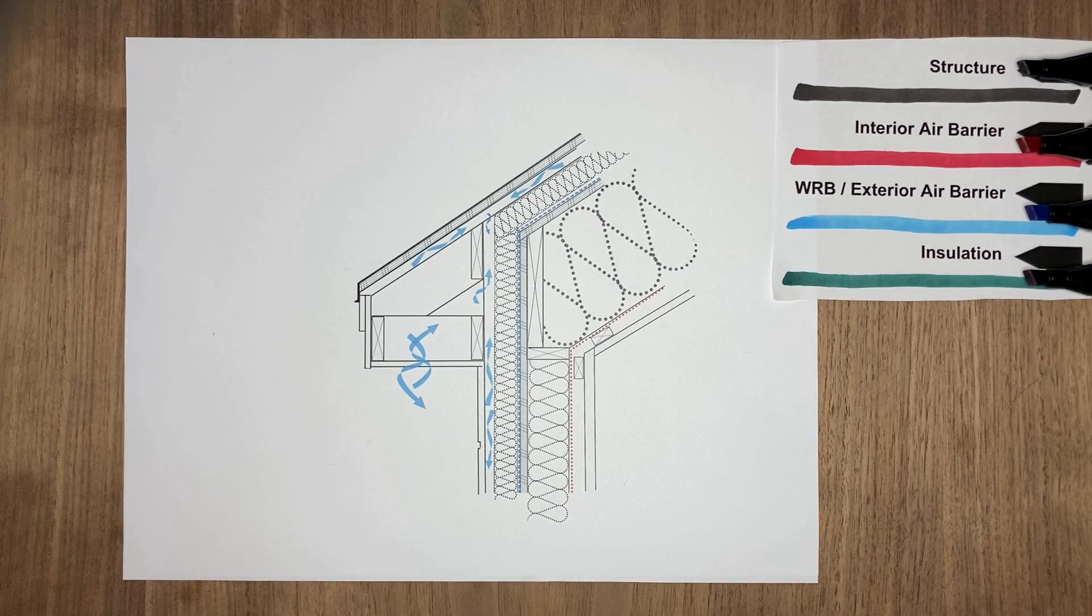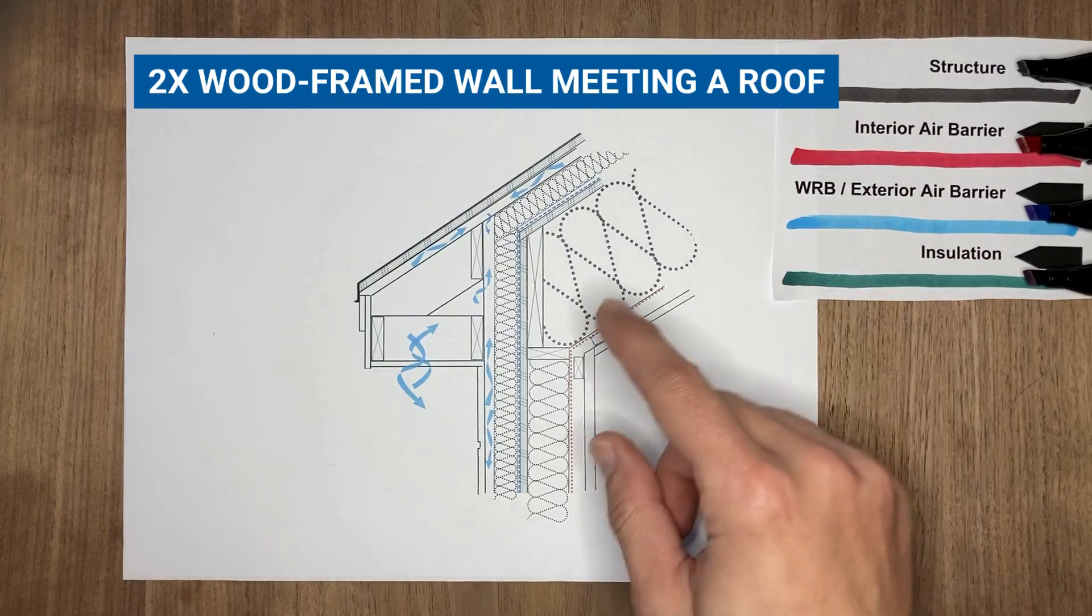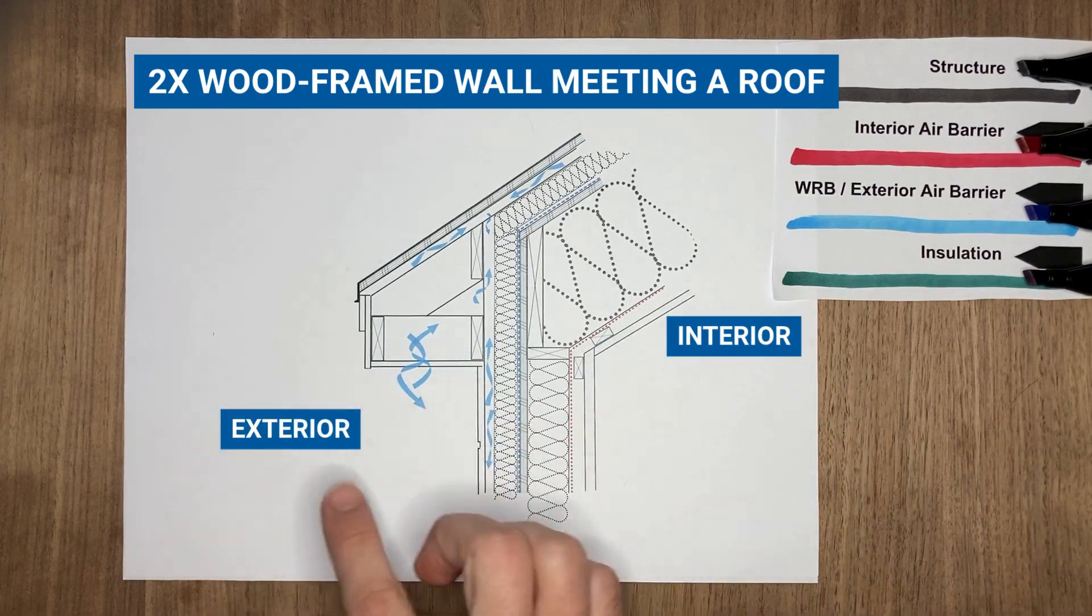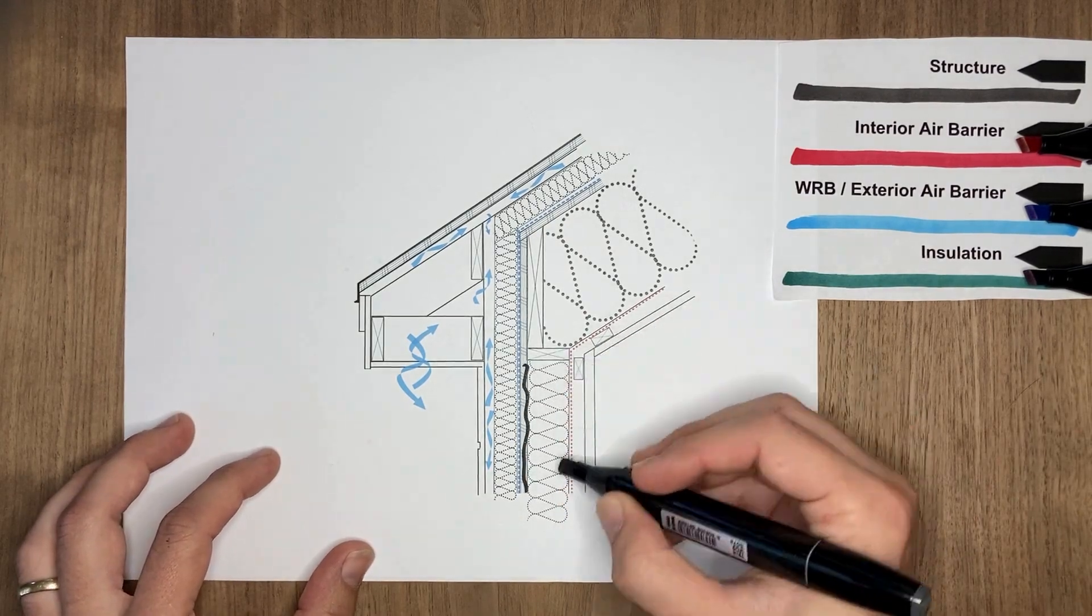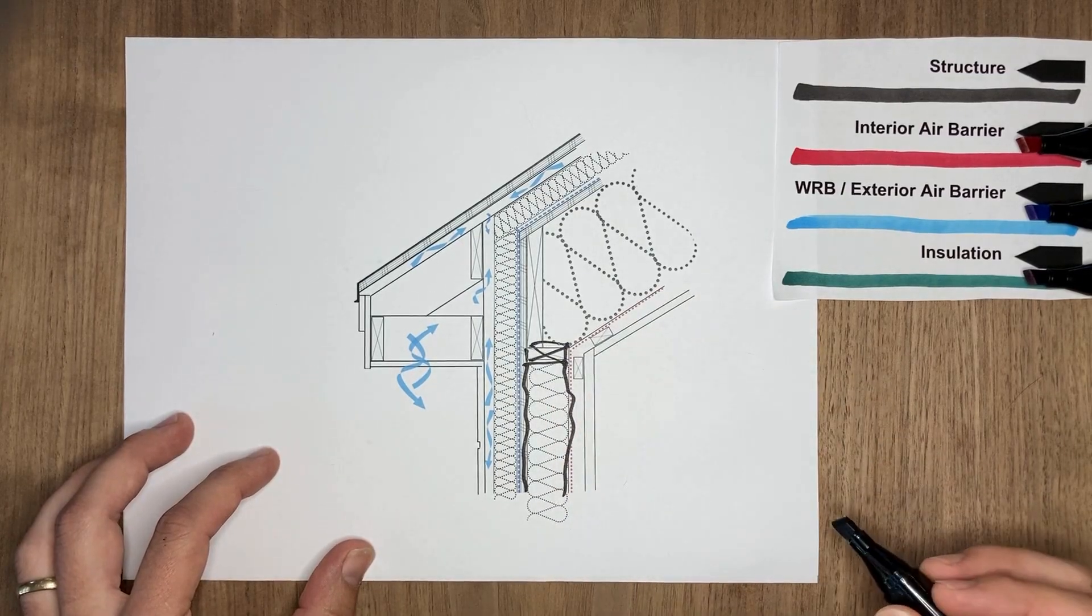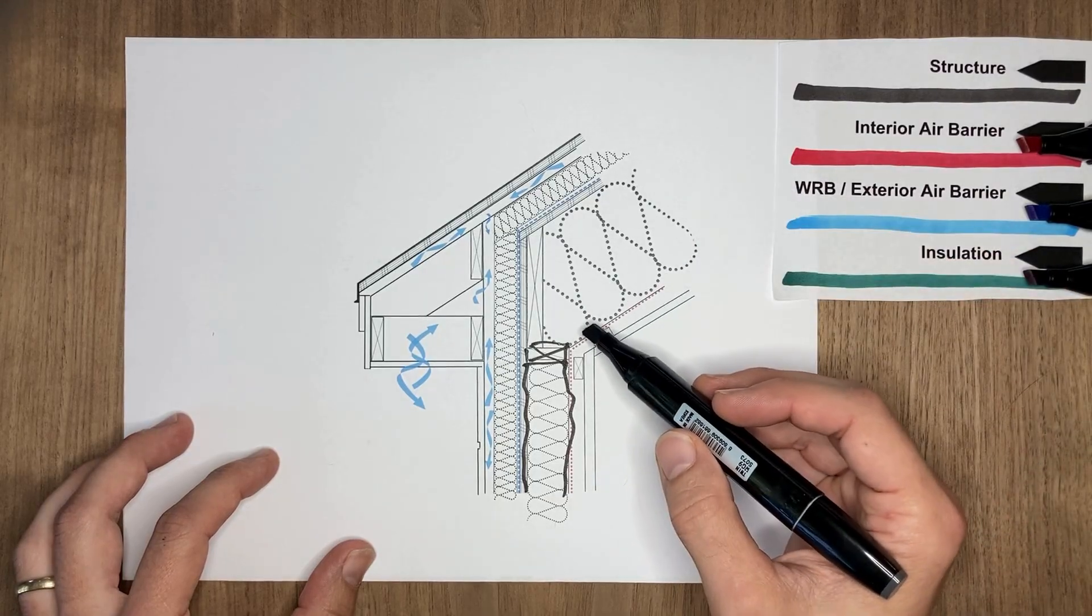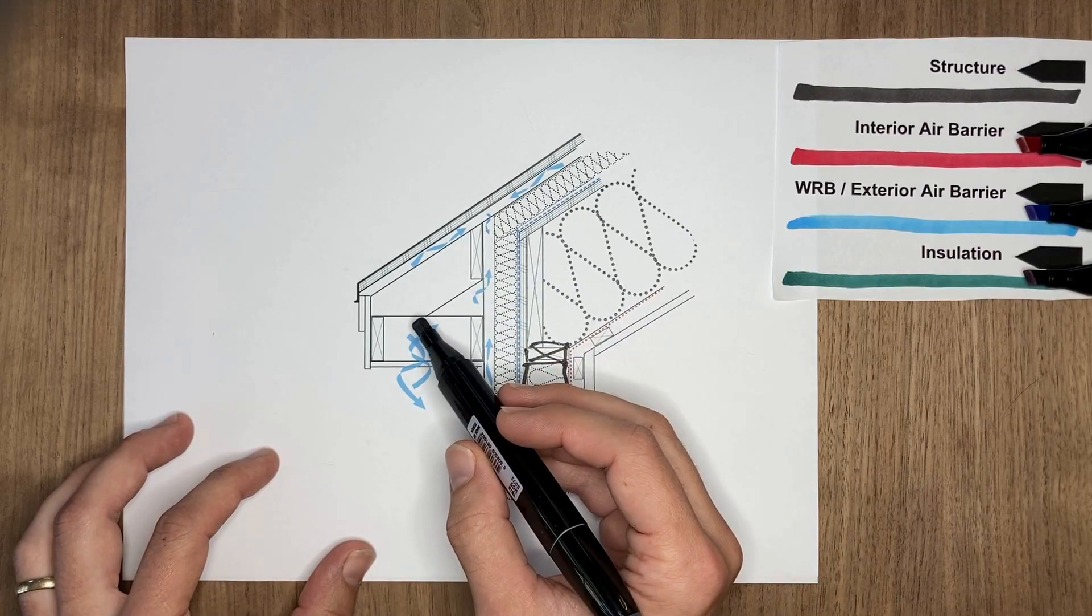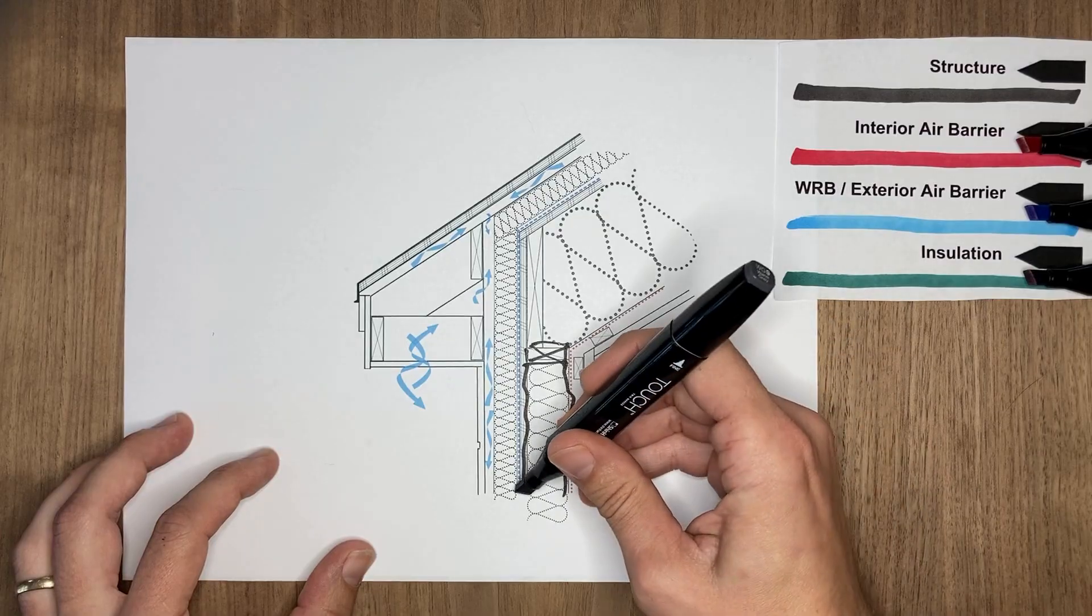We have a section drawing of a two-by wood-framed wall meeting a roof, this side being the interior and this side being the exterior. We have our stud wall framing with our top plate. You might have a double top plate, and our rafters are resting on this top plate, but the tails of those rafters do not continue through. They stop in line with the sheathing.